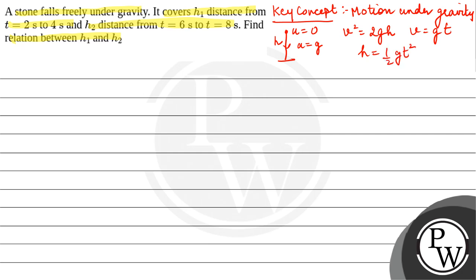Now, according to the question, the distance covered between 2 to 4 seconds is h1. So for that, first we'll take the distance covered in the first 2 seconds.